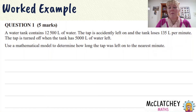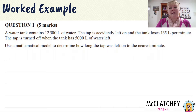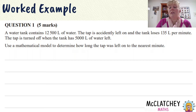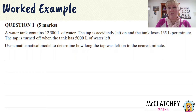Let's look at the question that was on paper 2 of the Queensland exam in 2020. Question 1 says: a water tank contains 12,500 litres of water. The tap is accidentally left on and the tank loses 135 litres per minute. The tap is turned off when the tank has 5,000 litres of water left. Use a mathematical model to determine how long the tap was left on, to the nearest minute. This was the very first question students faced in this paper 2, the complex paper for Queensland.